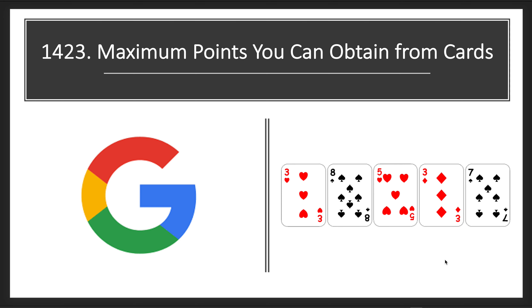Hello guys, welcome to my channel. Let's solve LeetCode problem 1423: Maximum Points You Can Obtain from Cards. This problem was asked in a Google interview. Given an array of cards with integer points, the cards are arranged and you have to pick k cards. You are allowed to pick a card either from the front (left/start) or from the back (right/end).